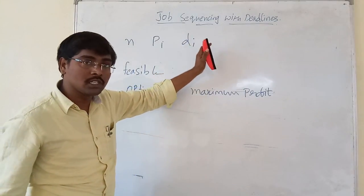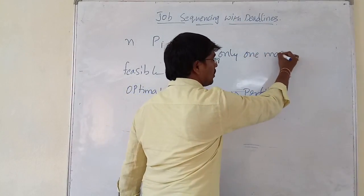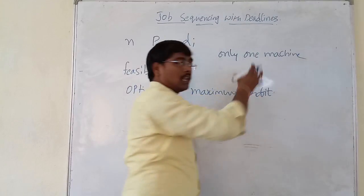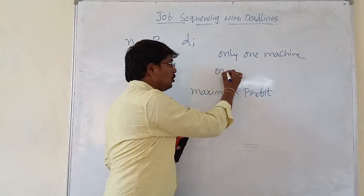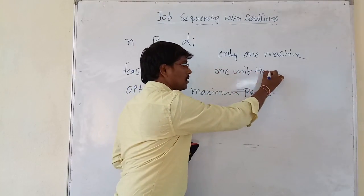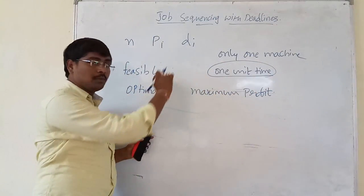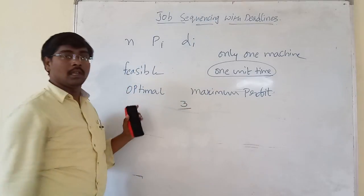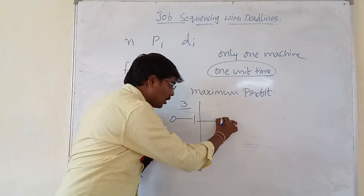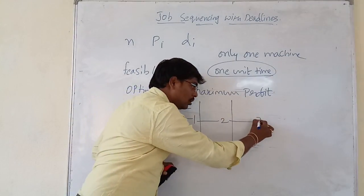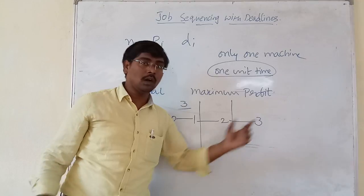Some of the constraints for executing a job are: we have only one machine available for executing a job. A very important condition is that a job is executed only in one unit of time. For example, if a job has deadline 3, it means the job is executed either in slot 0 to 1, or slot 1 to 2, or slot 2 to 3.